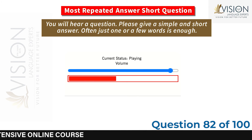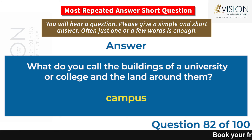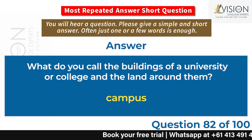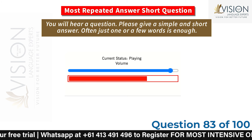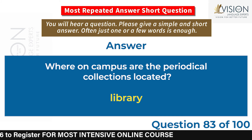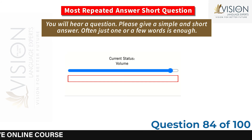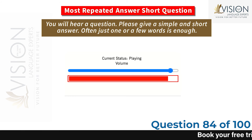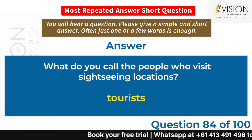What do you call the buildings of a university or college and the land around them? Campus. Where on campus are the periodical collections located? Library. What do you call the people who visit sightseeing locations? Tourists.